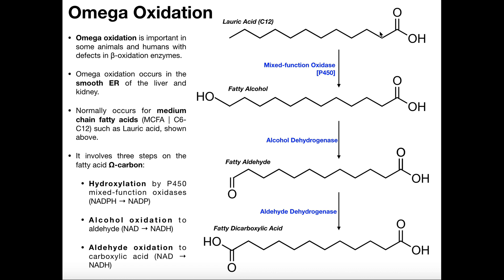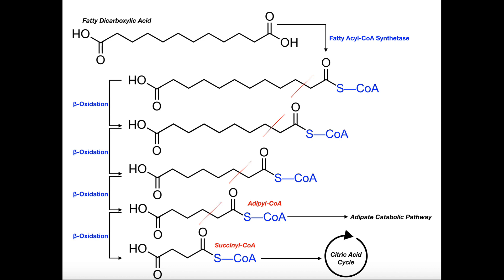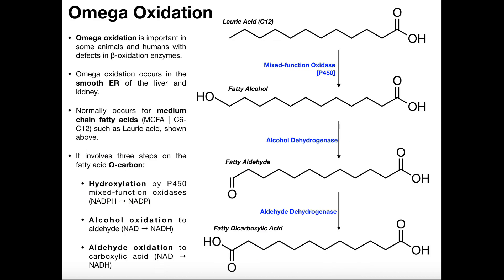In this video, we're going to cover one of the three major fatty acid catabolic pathways, and that's omega oxidation. We're going to cover it in two parts. First, we'll see the omega oxidation pathway itself, which is pretty short and straightforward, and then we'll see what actually happens to that fatty acid once we've oxidized its omega carbon and how we generate energy from that.